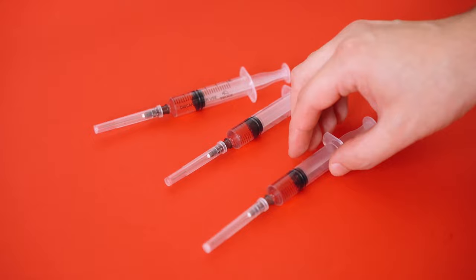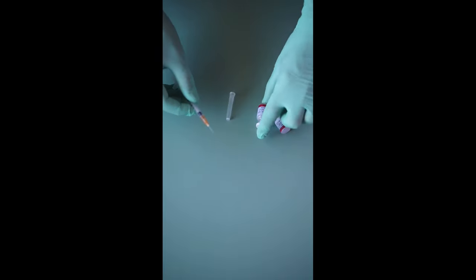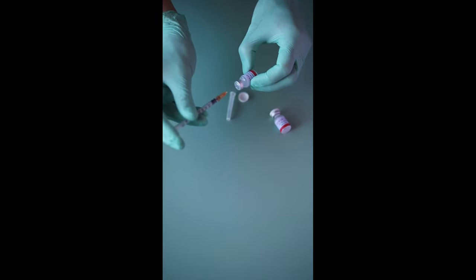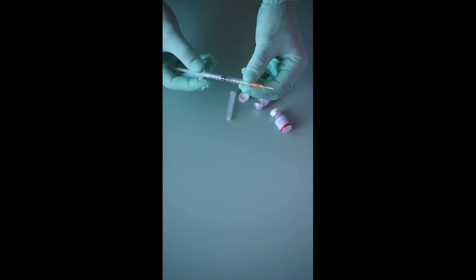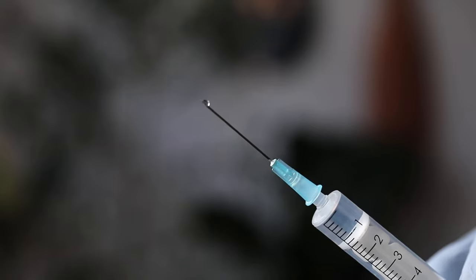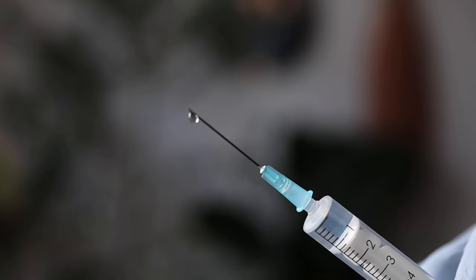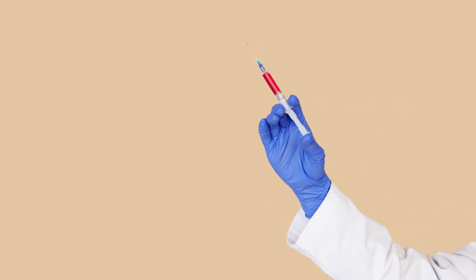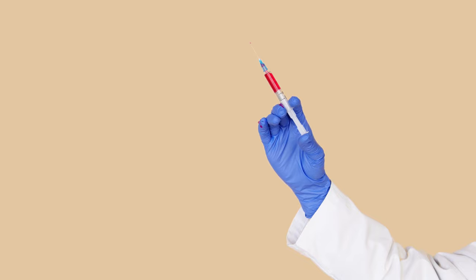A heart monitor is attached to the inmate. In most states, the intravenous injection is a series of drugs given in a set sequence, designed to first induce unconsciousness followed by death through paralysis of respiratory muscles and/or by cardiac arrest through depolarization of cardiac muscle cells. The execution involves three separate injections. The first is sodium thiopental or pentobarbital, an ultra-short-action barbiturate and anesthetic agent used at a high dose that renders the person unconscious in less than 30 seconds.